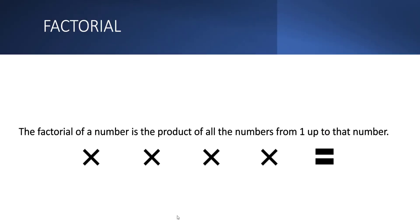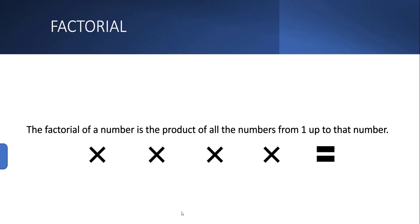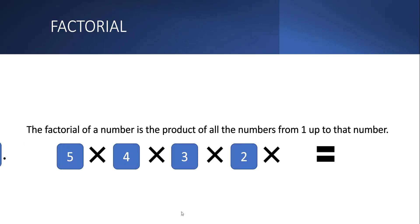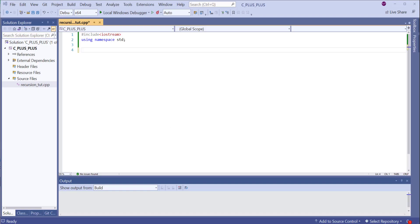The factorial of a number is the product of all the numbers from 1 up to that specific number that the user inputs. For example, the factorial of 5 is 5 times 4 times 3 times 2 times 1, which equals 120. For this tutorial, I'm going to write two functions that demonstrate how recursion works in computer programming.